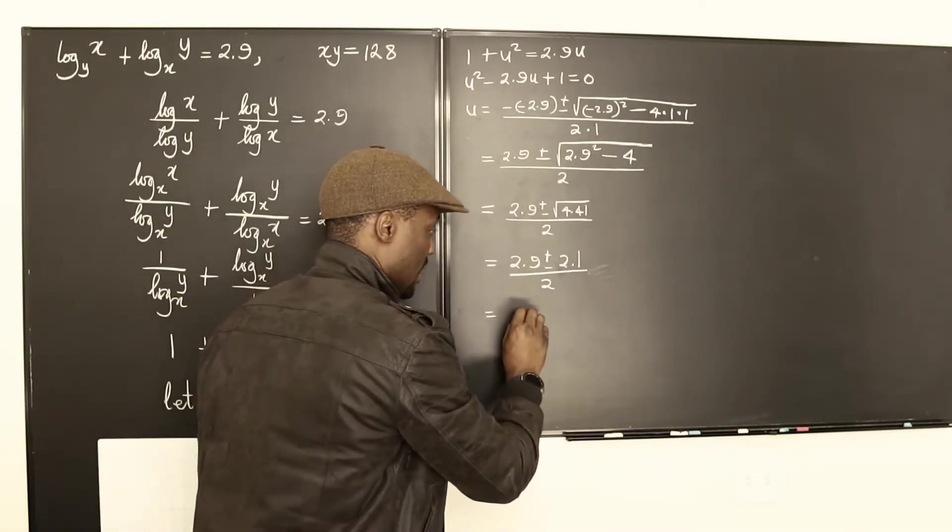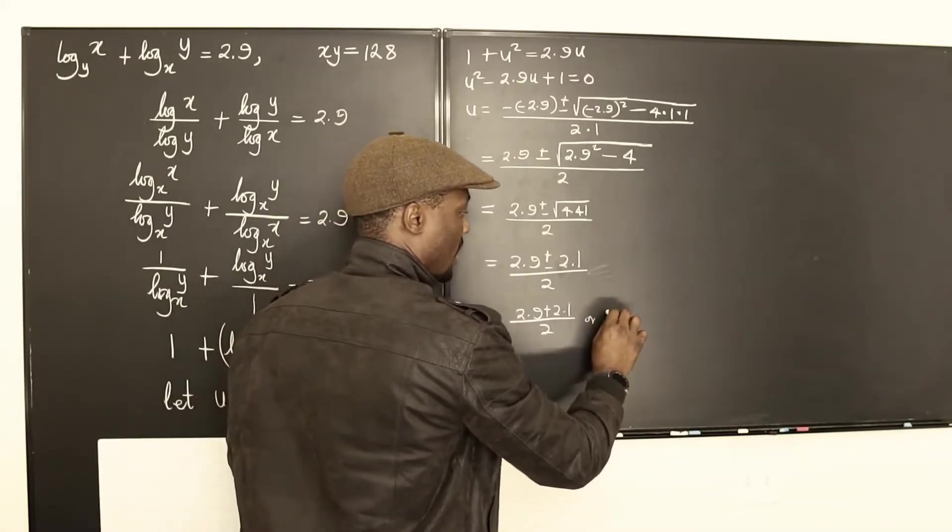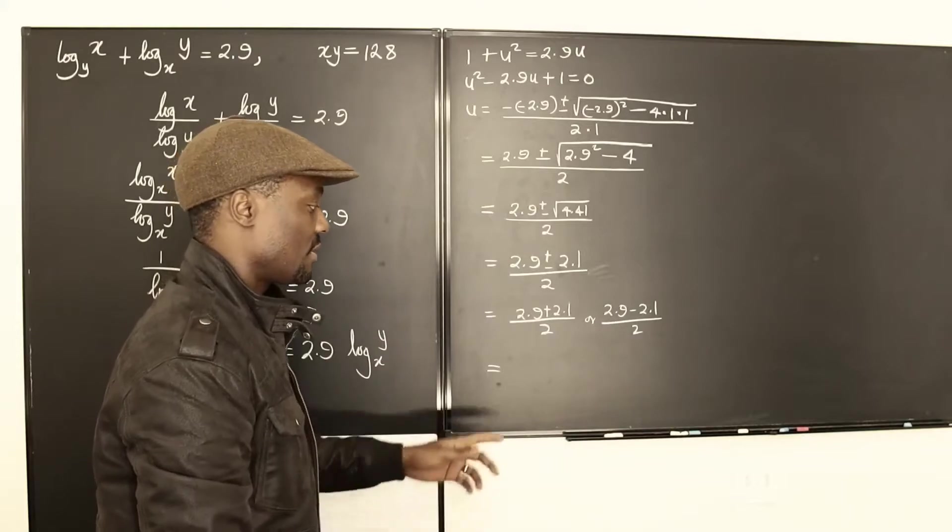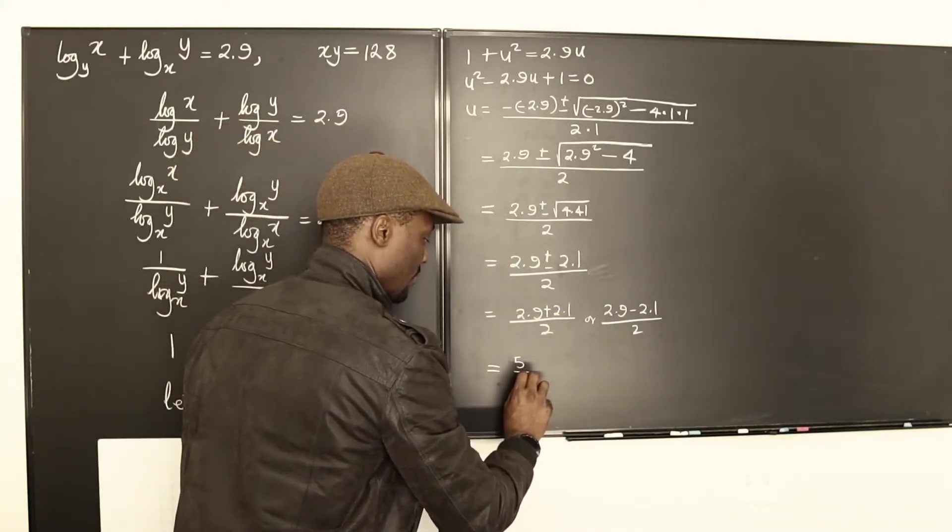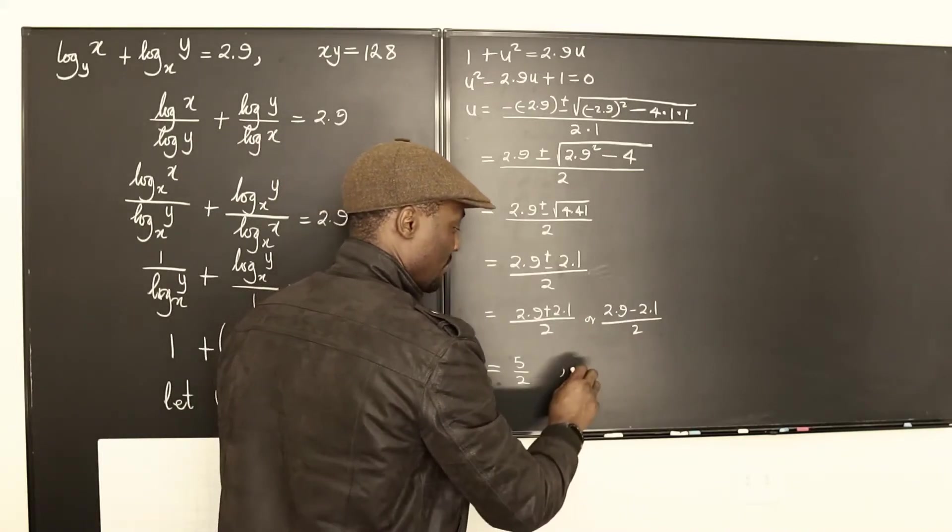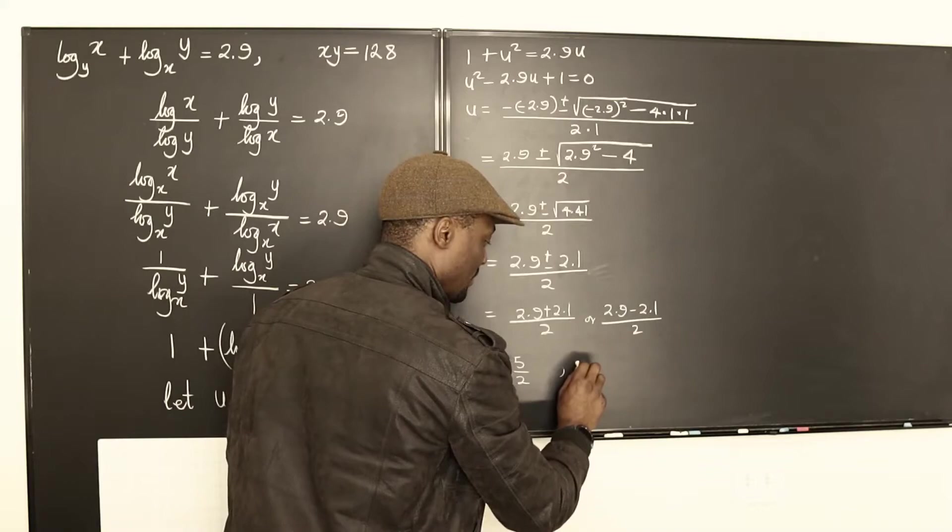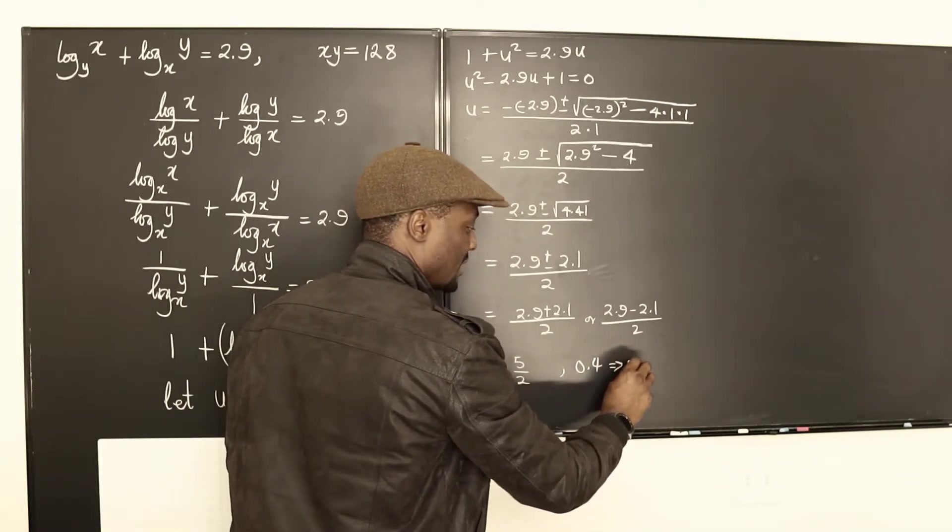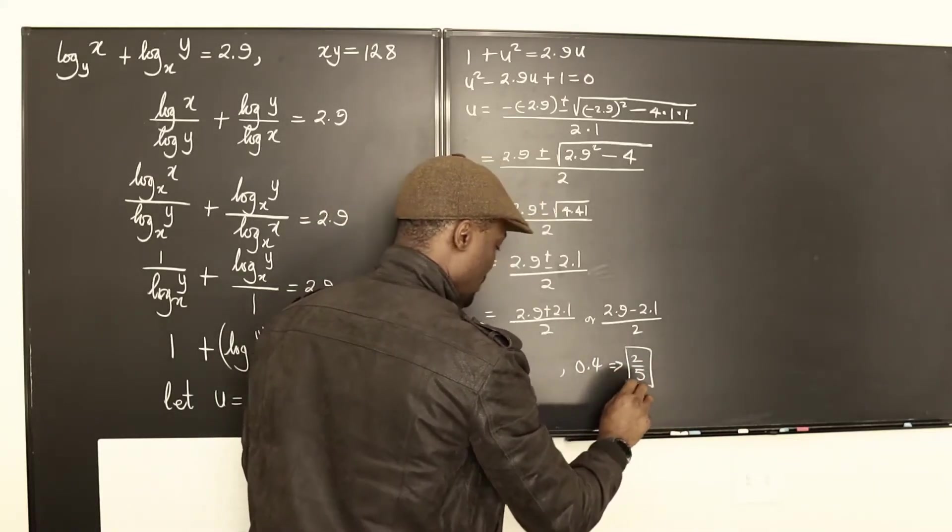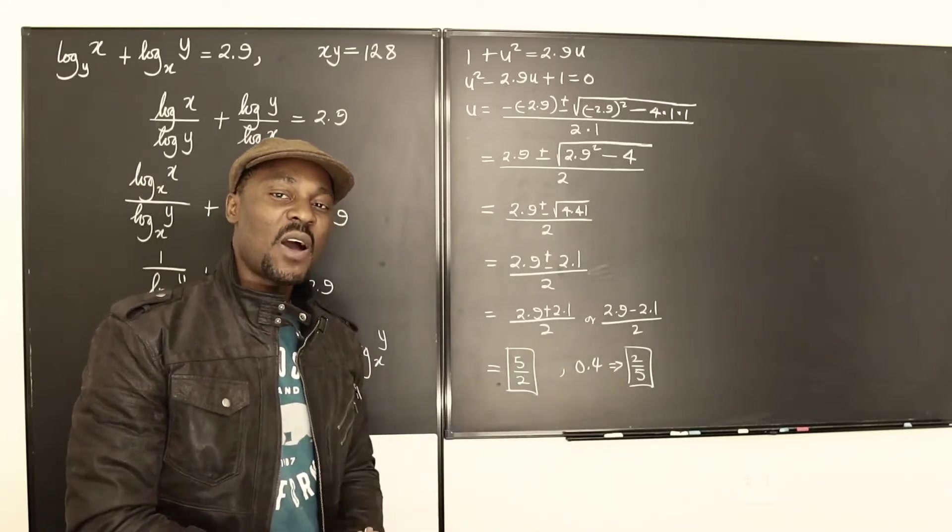That would be 2.9 plus or minus the square root of 4.41 is 2.1 all over 2. This leaves us with 2.9 plus 2.1 over 2 or 2.9 minus 2.1 over 2. This gives us 5 over 2. And this answer gives us 0.8 over 2, which is 0.4. And 0.4 is going to be 4 over 10, which is 2 over 5. Well, let's just write 0.4. 0.4, which also implies 4 over 10, which is 2 over 5. So we have two possible answers here. 5 over 2 or 2 over 5. Let's go see how that's going to work out.